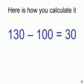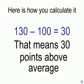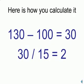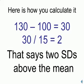Here's how you calculate it. Take the 130, the raw score, subtract the mean of 100, and that gives us a numerator of 30 — that means 30 points above average. We then take that numerator of 30 and divide by a denominator of 15, which is the standard deviation, and that leaves us with 2 as the z-score. That says that we are two standard deviations above the mean.